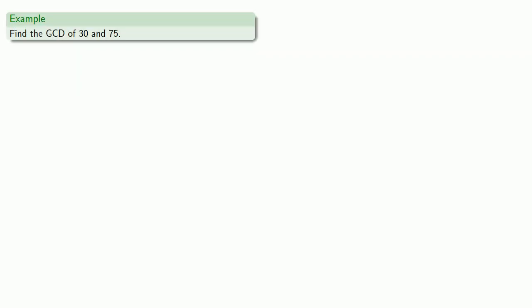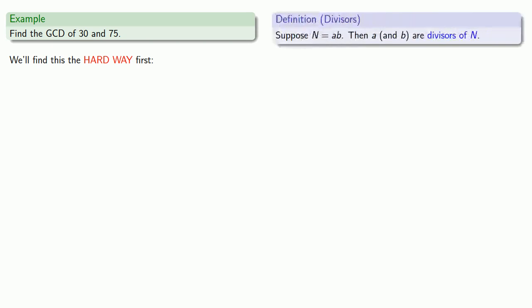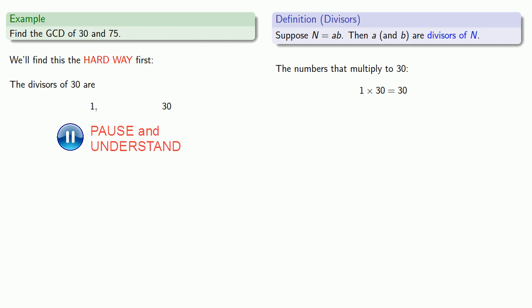So let's find the GCD of 30 and 75. We'll find this the hard way first. So remember that when we're looking for divisors, we're looking for things that multiply to the number. So we want to find things that multiply to 30. So the numbers that multiply to 30, well let's start with 1 times 30 gives us 30. And so we know that 1 and 30 are divisors. 2 times 15 equals 30, and so we know that 2 and 15 are divisors. 3 times 10 is 30, so 3 and 10 are divisors.